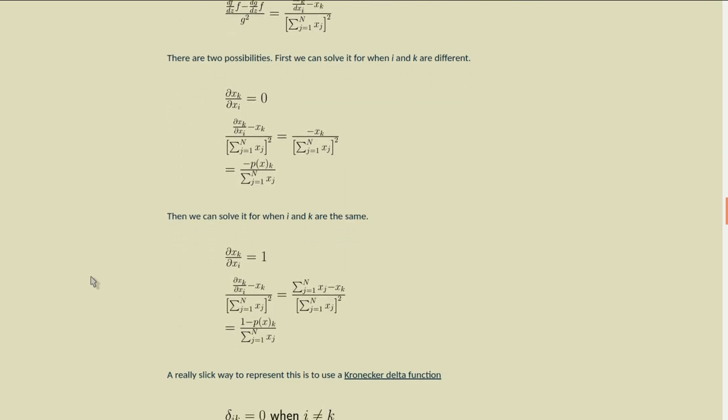So there's two possibilities here. First, we can solve it when i and k are different. In that case, the partial of x sub k with respect to x sub i will be zero. They are independent. This is the assumption that we make when we calculate the gradient, the linearized gradient. So in that case, this simplifies down to minus x sub k over the square of the sum of all of the x's, which we can substitute in our expression for p of x sub k, which is then minus p of x sub k over the sum of all our x's. And then we can also solve it for when i and k are the same, in which case the derivative of x sub k with respect to x sub i will be one, because they are one and the same. And when we simplify it, we get one minus p of x sub k all over the sum of the x's.